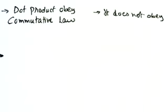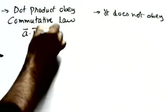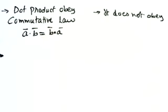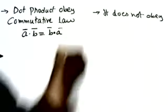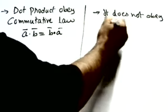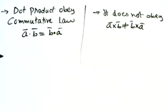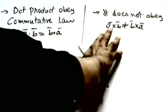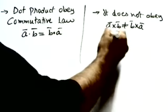Dot product obeys the commutative property: a·b = b·a. Whether you find a·b or b·a, the value will be the same. Whereas cross product does not obey commutative property: a×b ≠ b×a.